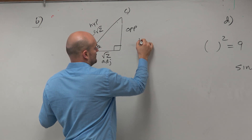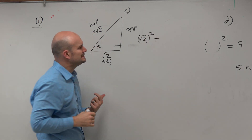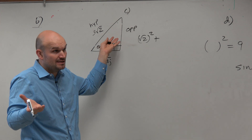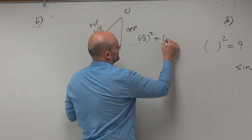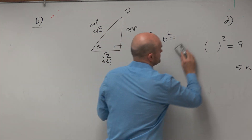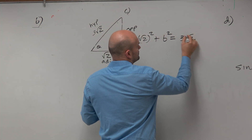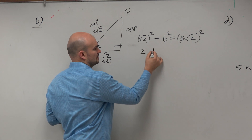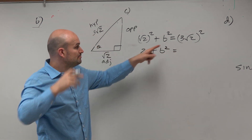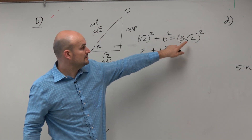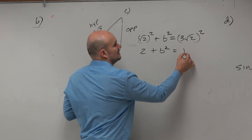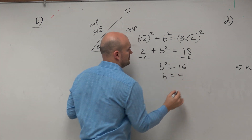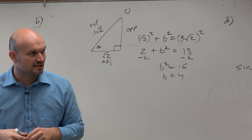So let's go ahead and use the Pythagorean theorem. I can say the square root of 2 squared plus b squared equals 3 square root of 2 squared. Square root of 2 squared is just 2. You're squaring both terms, so 3 squared is 9 and square root of 2 squared is 2, giving 9 times 2 is 18. Take the square root of both sides and we get a nice 4.